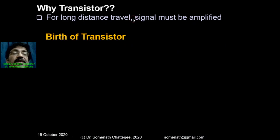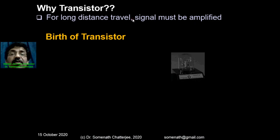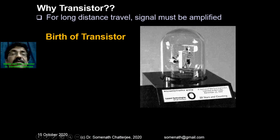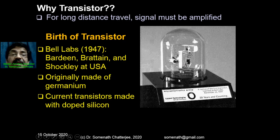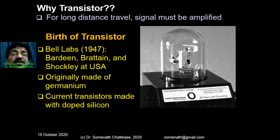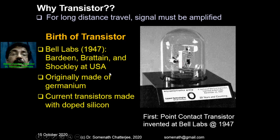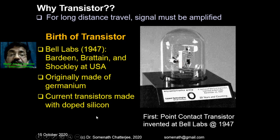Now, some history of the transistor. In 1947, at Bell Labs, Bardeen, Brattain, and Shockley — these three people invented the first point-contact transistor, which is kept at Bell Labs, now known as Lucent Technologies, in the United States. They used germanium as the material, but nowadays we use doped silicon.